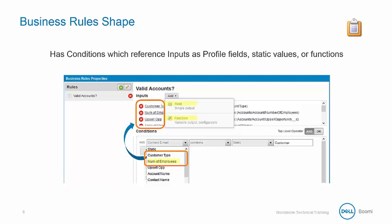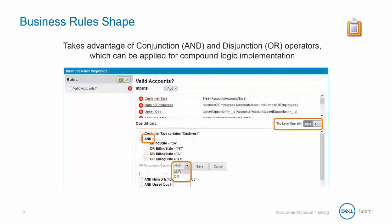Inputs can be added as field or function values and conditionally compare the values statically or to each other. The business rules shape takes advantage of conjunction and disjunction operators, which can be applied for compound logic implementation.